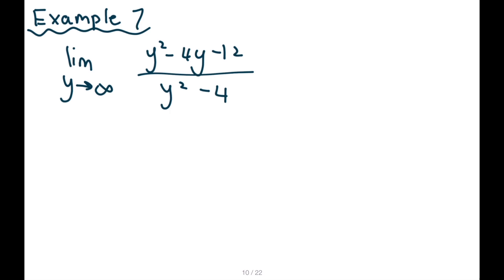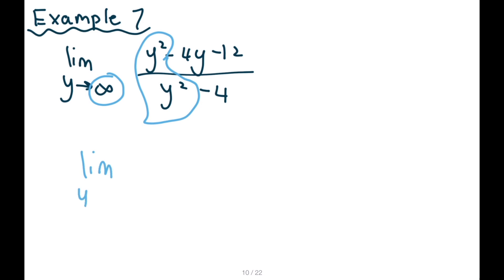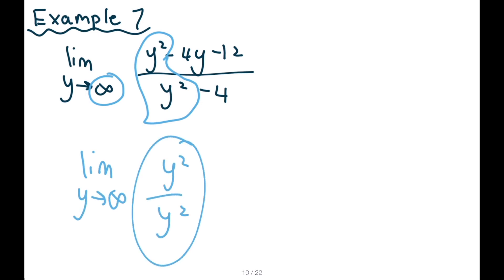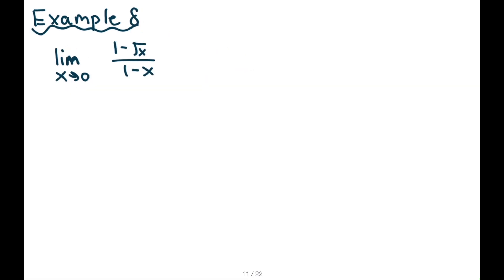Question seven: it's going to infinity, so we take the largest power on top and bottom. Limit as y goes to infinity: y² over y² — doesn't that cancel out? The answer is one.